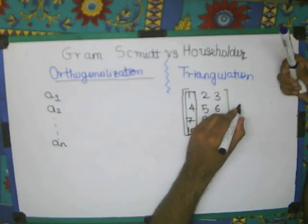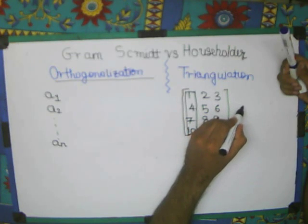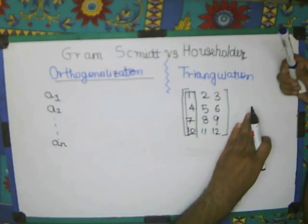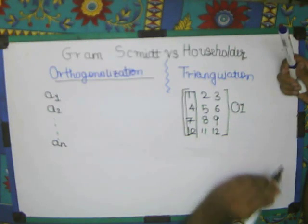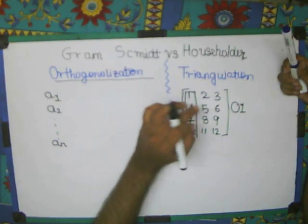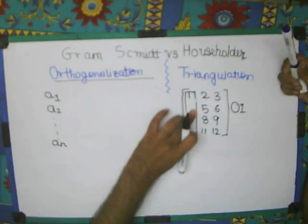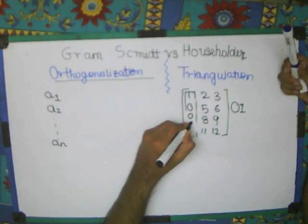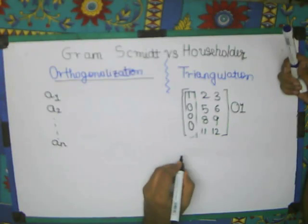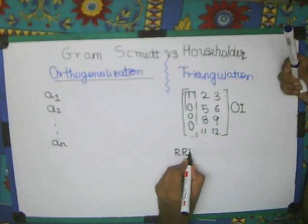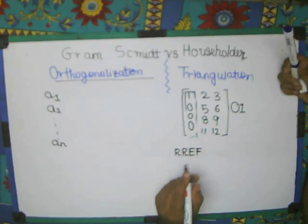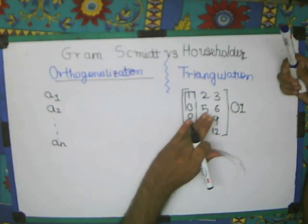So I suppose do an operation or multiply by a matrix Q1 or something, some sort of, let me tell operation O1. When I do operation O1, this will become 0, just like we are doing row reduction, RREF form, but instead of RREF we are just trying to obtain a triangular form.